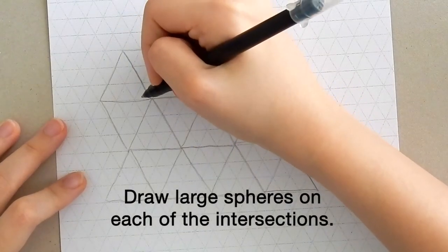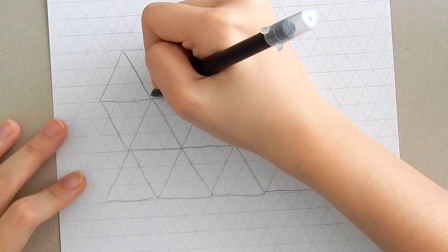So what we're going to do now is we're going to draw large spheres on each of the points of the triangles.